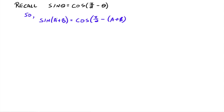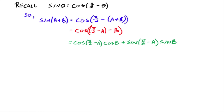We have sin(A+B). That should be the same thing as cos(π/2 − (A+B)). Distributing the negative 1 through gives π/2 − A − B, and we group it as (π/2 − A) minus B. So we've rewritten sin(A+B) as the cosine of the first angle (π/2 − A) minus the second angle B. Using our cosine difference identity, that equals cos(π/2 − A)·cosB + sin(π/2 − A)·sinB.